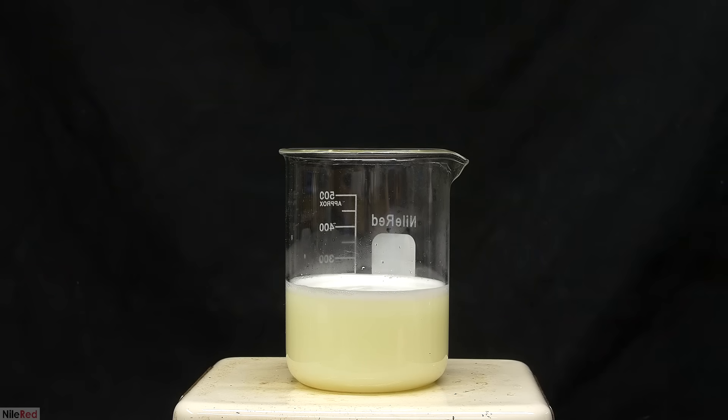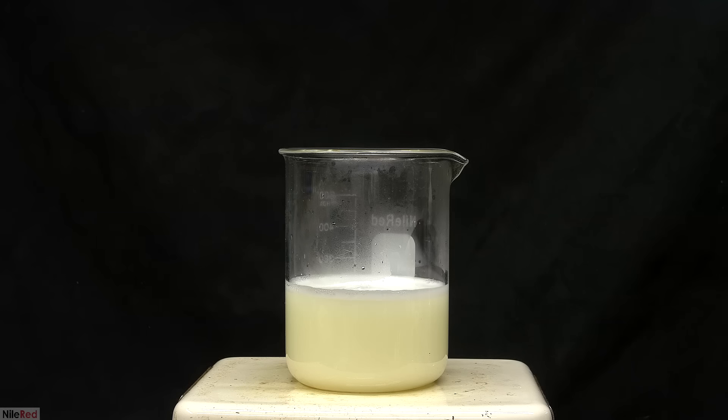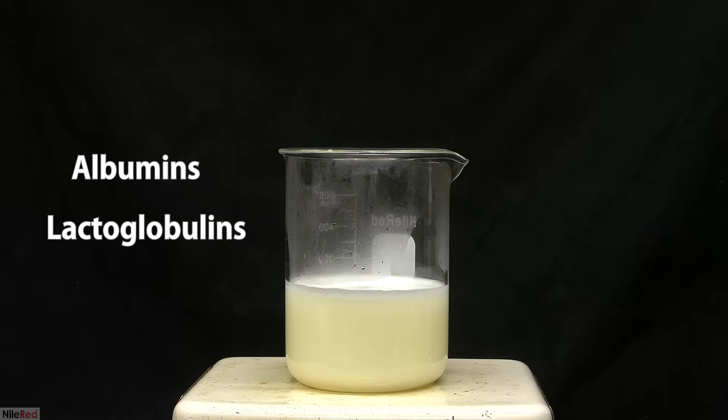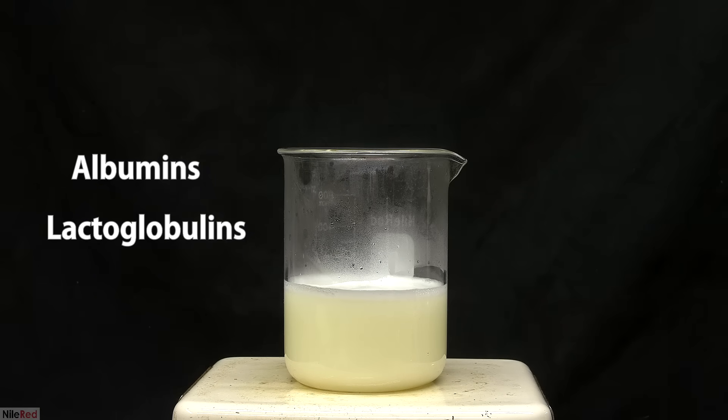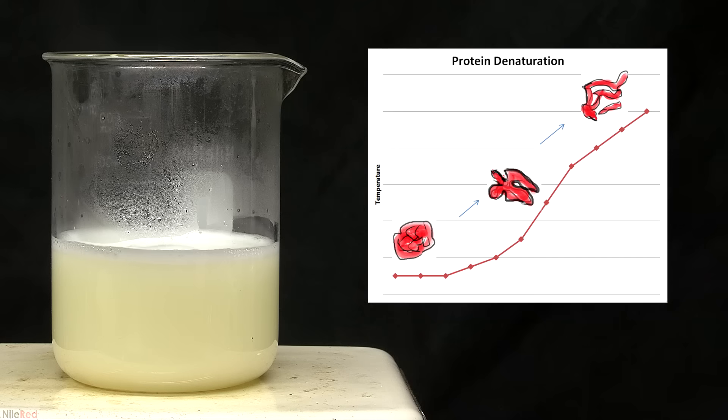So what we're doing here is separating out the whey proteins. Whey proteins are the proteins that are still dissolved in solution after the casein has been removed. The two major whey proteins in milk are albumins and lactoglobulins. When the solution is heated to boiling, the structure of the proteins are compromised, and they become denatured. They're no longer able to dissolve in the water, and they precipitate out.